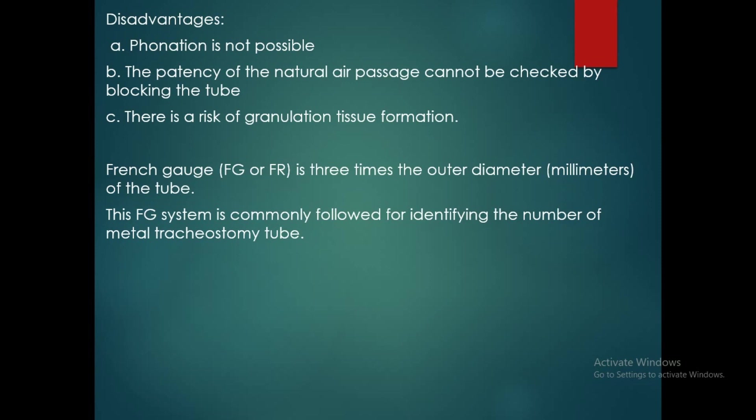The French gauge is three times the outer diameter of the tube. This French gauge system is commonly followed for identifying the number of metallic tracheostomy tubes. Metallic tracheostomy tubes can be retained for a longer time, so patients who need a tracheostomy tube for longer periods can be switched from a polyvinyl chloride tube to a metallic tube and seen at home with follow-up.